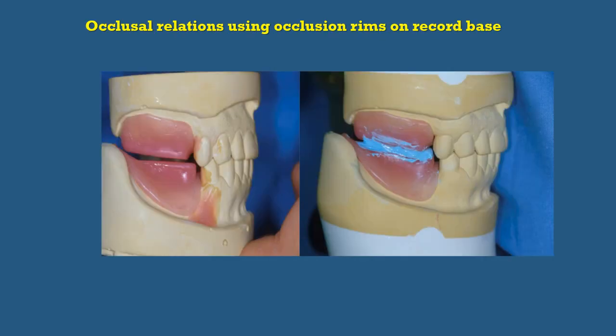The third method is occlusal relation using occlusal rims on record bases. This method is indicated when you have one or more distal extension areas such as in Kennedy Class I and Class II, when you have a tooth-supported edentulous area that is too long, or in cases where the opposing teeth do not meet. As seen in the picture, a Kennedy Class I case has an occlusal rim constructed and the inter-occlusal record is recorded using silicone or zinc oxide eugenol materials.